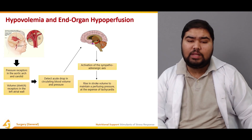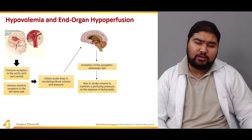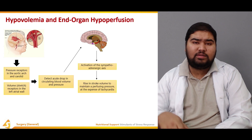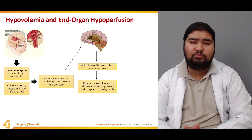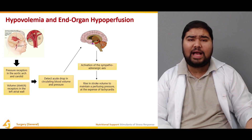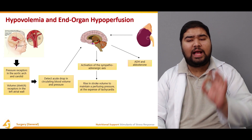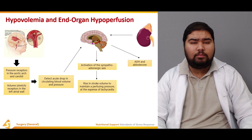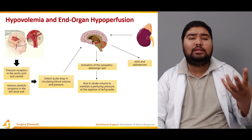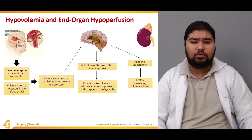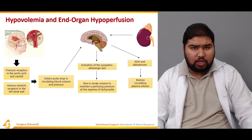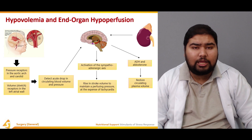When the stretch receptors in the atrial walls and the pressure receptors in the aortic arch and carotid bodies detect low volume or low pressure, they send signals to the brain, activating the sympatho-adrenergic axis. This causes tachycardia, increasing heart rate, which corrects the hypoperfusion so tissues are adequately perfused. Simultaneously, the brain triggers release of anti-diuretic hormone and aldosterone, which act on the kidney to cause resorption of water and electrolytes, increasing volume and restoring circulating plasma volume.